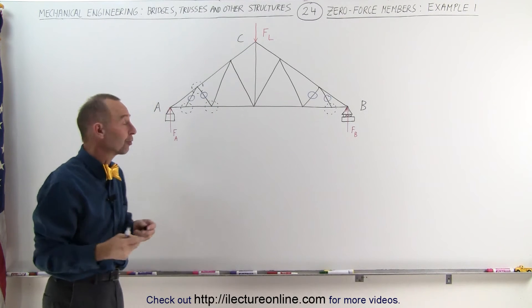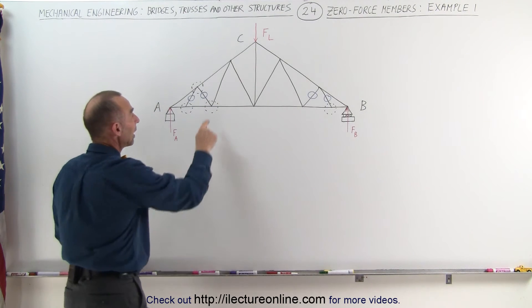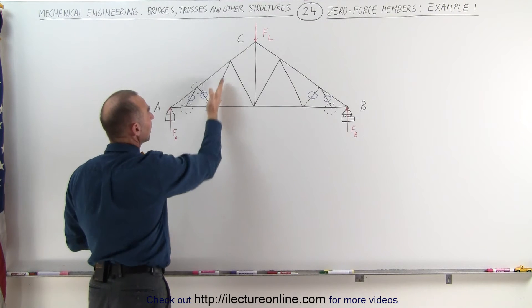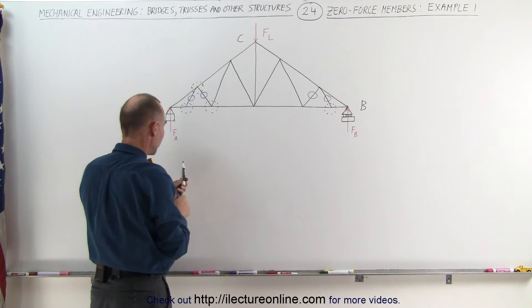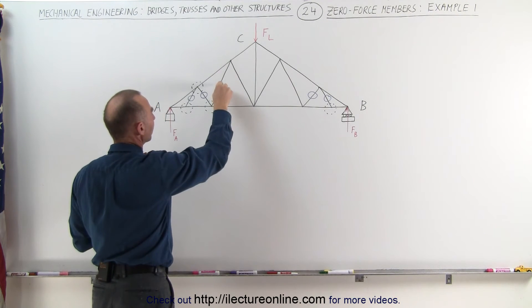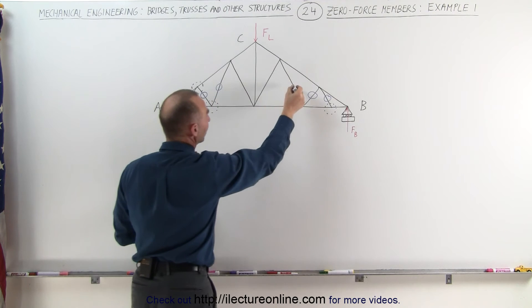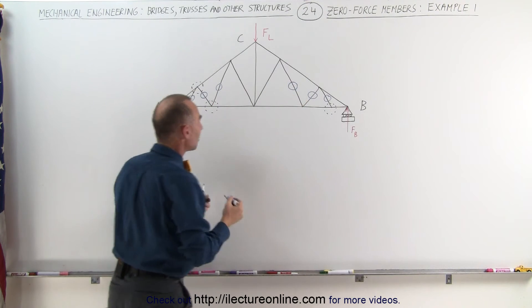The fourth one, since it's a zero force member, can be ignored. We have those two members that are collinear, therefore this member here must be a zero force member. Over here again, because of symmetry, we can do the same over there.